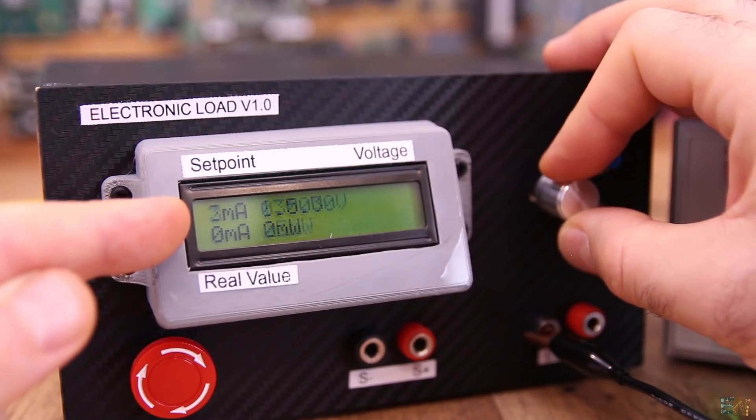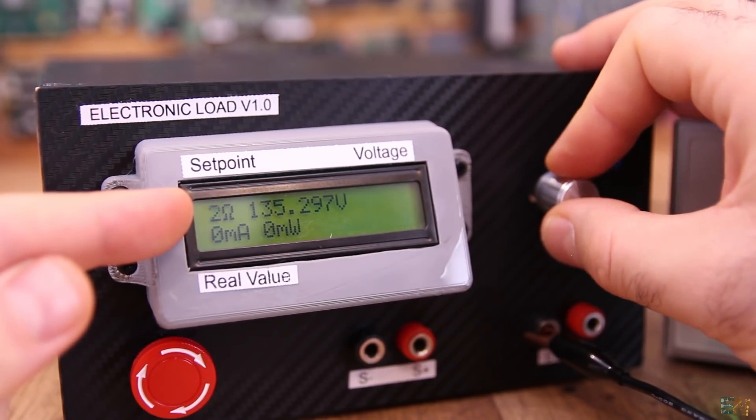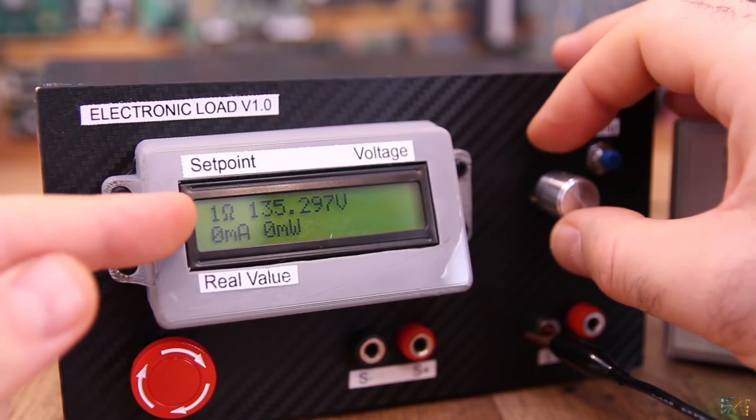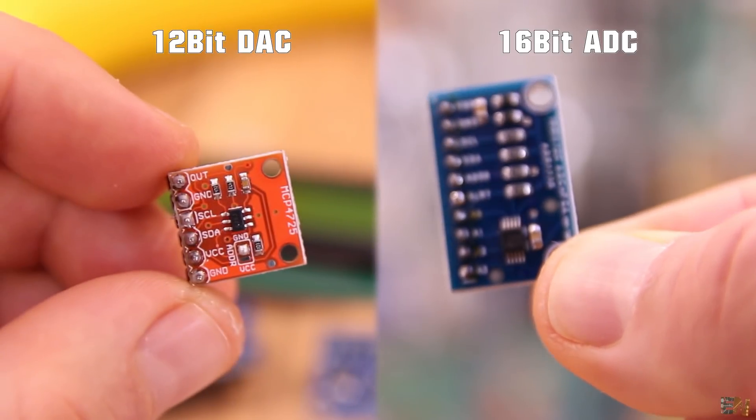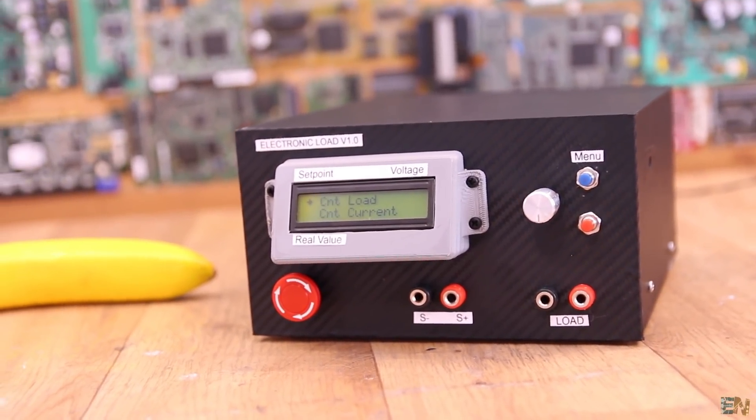This new version has a resolution of 1mA for the current, 1mW for the power and 1 ohm for the resistance because I'm using a 16-bit ADC and a 12-bit DAC. Now let's see how to build this. First, let's see what we need.